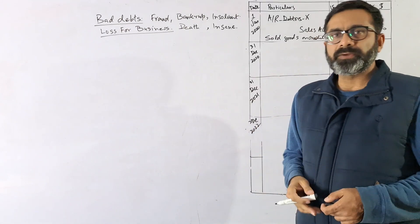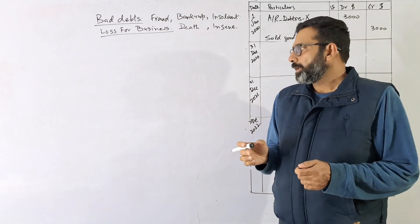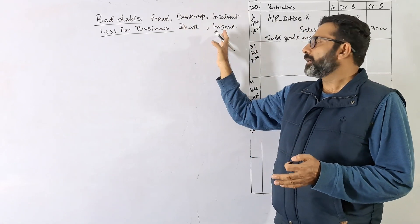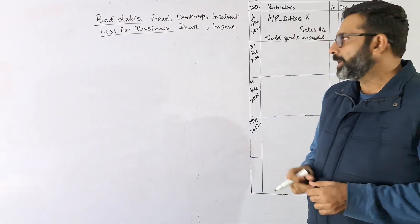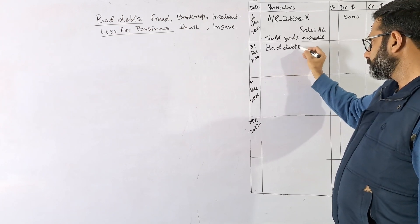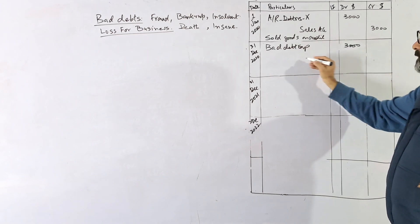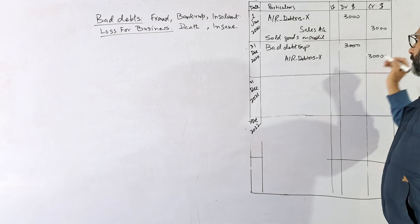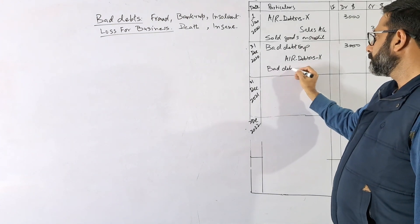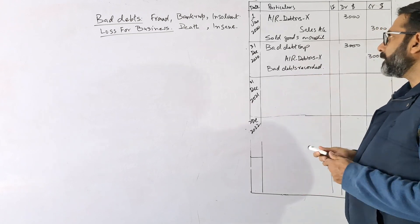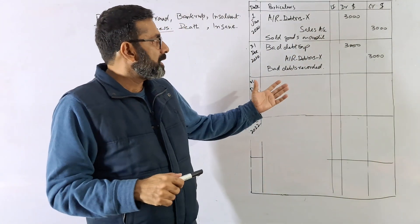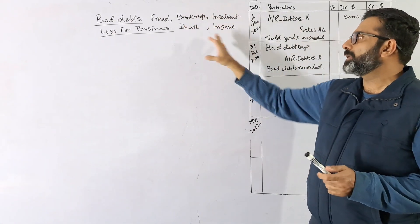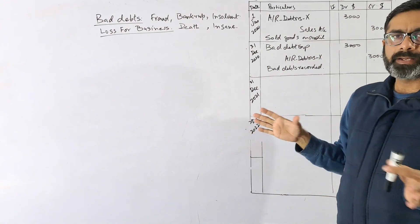Now, for example, on December 31st when the financial year is closing, you get information that the person is bankrupt, insolvent, has died, or became insane and you are unable to receive the money — that is the bad debt. So bad debt expense is debited for $3,000 and the account receivable — Mr. X — is credited by $3,000. The person was unable to pay due to fraud, bankruptcy, insolvency, death, or insanity, so you directly record the bad debts.